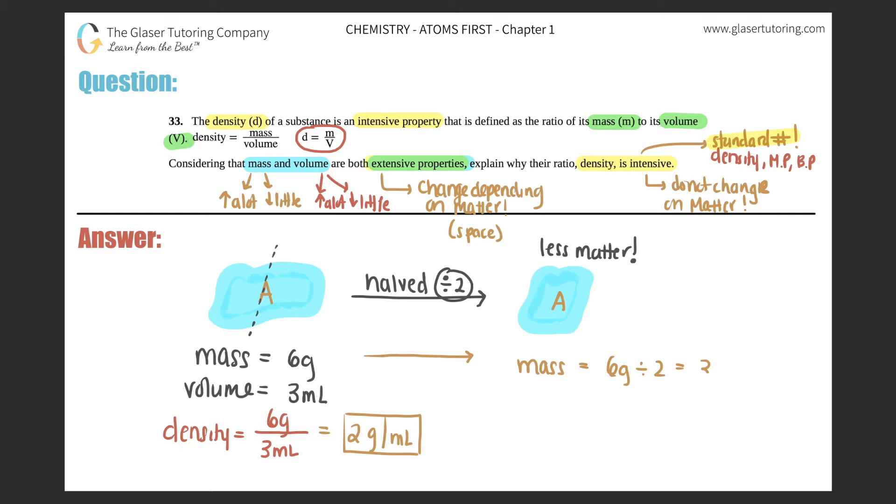And the same thing with the volume, because volume is extensive. So my new volume would not be three mils, it would be divided by two, which is 1.5 ml. Or you could have kept it as three over two, it does not matter. But now those are my two new mass values and volume values.